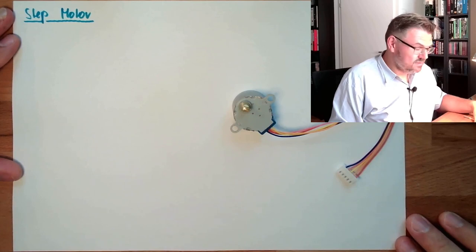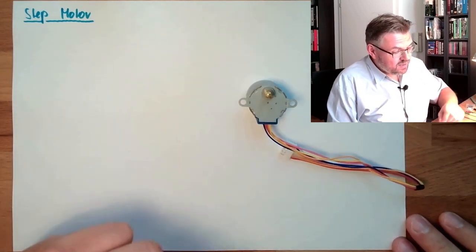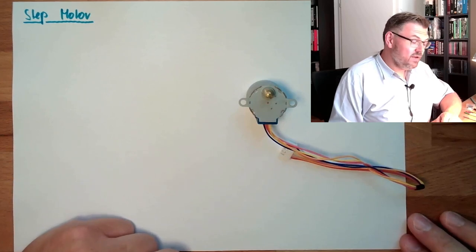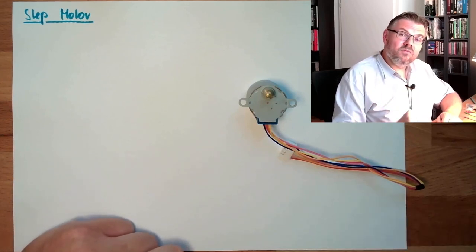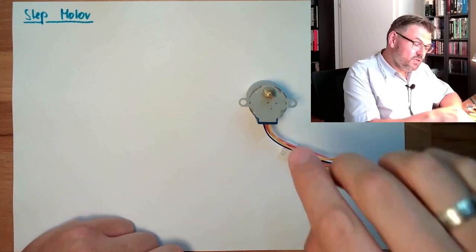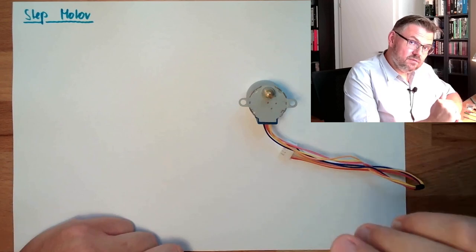What is it? A stepper motor actually can turn left, can turn right, but not to any position. The position of the rotor can only be changed in steps. Alright?